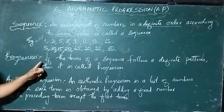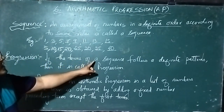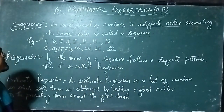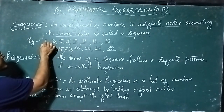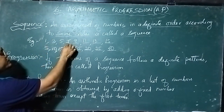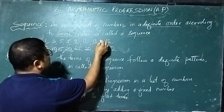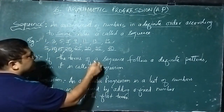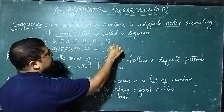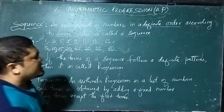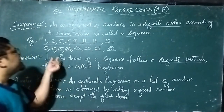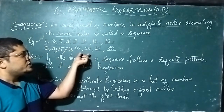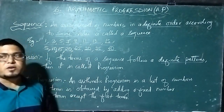That is progression. What is progression? If the terms of a sequence follow a definite pattern. Here I have given some examples: term 1, term 2, term 3, term 4, term 5, term 6, term 7, term 8. In the first example we have till term 7, and it follows a definite pattern. The pattern here is a difference of 2, 2, 2 in this case, and here we have the difference of 5, 5, 5. So it follows the pattern, and that pattern is called progression.